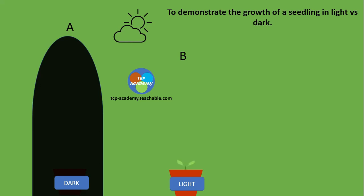If we observe carefully, a plant in the dark condition is growing a little faster than the plant that is exposed to light.